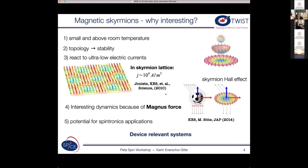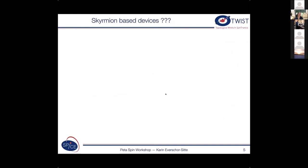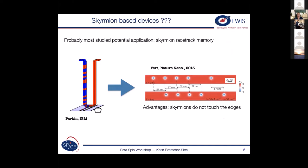And since they do occur in these systems that are device relevant they might also have potential for spintronics applications. So if you think of skyrmion based devices, let's say now we have these skyrmions and we just want to build a device based on them then probably the most studied potential application is the skyrmion racetrack memory. So the racetrack memory was a suggestion by Stuart Parkin where you put kind of domain walls on such a track, a one dimensional wire, and you move them and thereby you can store information in these domains.